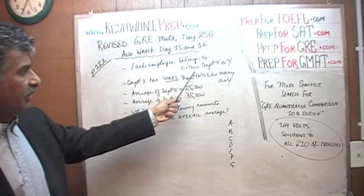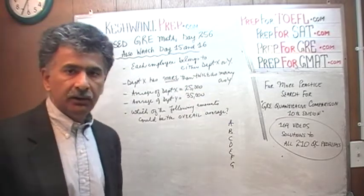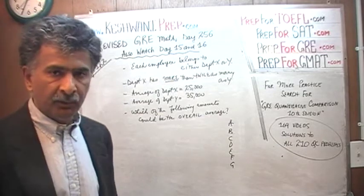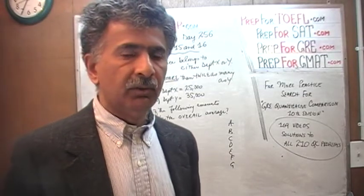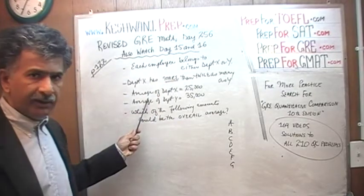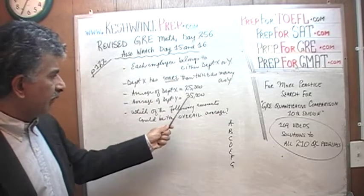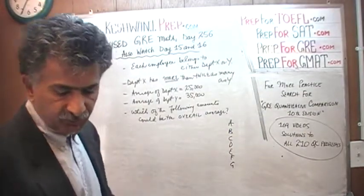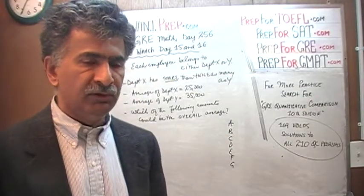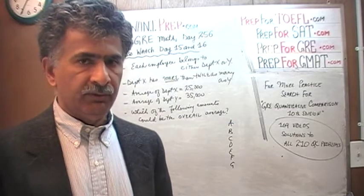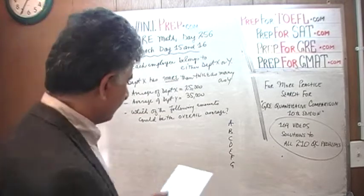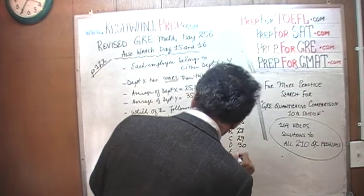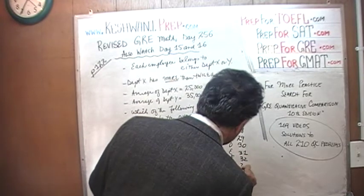We are told that each employee belongs to either department X or department Y. Department X has more than twice as many people as department Y — that is very important. It does not have exactly twice, but more than twice as many. The average salary in department X is $25,000, and every salary in department Y is $35,000. The question is: which of the given amounts could be the overall average? This is a new type of question where there can be more than one correct answer. The answer choices are: A) $26,000, B) $28,000, C) $29,000, D) $30,000, E) $31,000, F) $32,000, and G) $34,000.